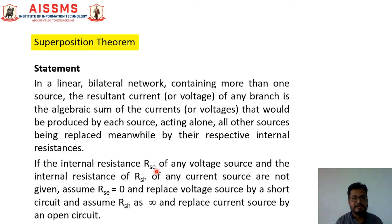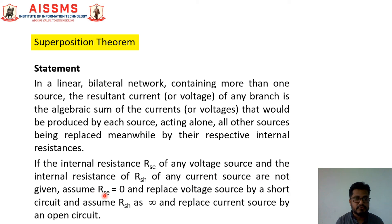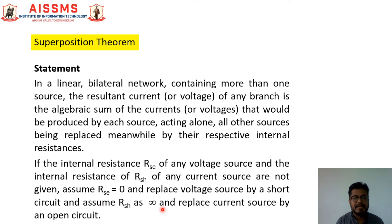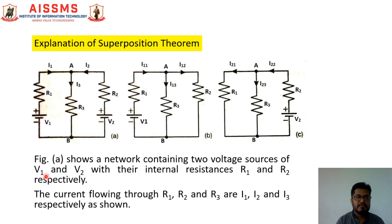If the internal resistance RSE of any voltage source and the internal resistance RSH of any current source are not given, assume RSE equal to 0 and replace the voltage source by a short circuit. And assume RSH as infinity and replace the current source by an open circuit.